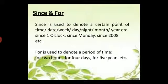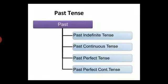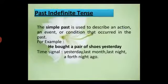Now let's know about past tense. Like other tenses, past tense also has four forms: past indefinite, past continuous, past perfect, and past perfect continuous. Past indefinite or simple past is used to describe an action, event, or condition that occurred in the past.